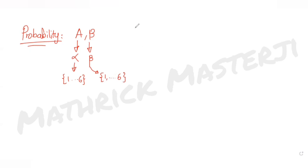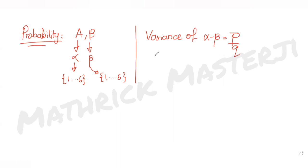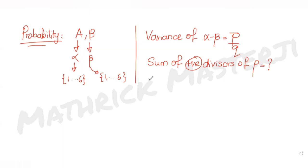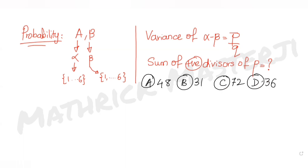The variance of alpha minus beta is equal to p over q, where p and q are co-prime. We need to find the sum of positive divisors of p. The answer choices given are 48, 31, 72, and 36.